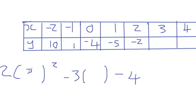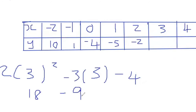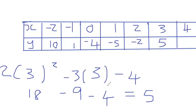Now the x value is 3. So we're going to substitute 3 into the equation. 3 squared is 9, times 2 is 18. Minus 3 times 3 is 9. So that's minus 9, minus 4. Calculating this: 18 minus 9 is 9, minus 4 gives us 5. So our y value is 5.